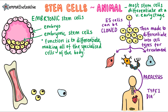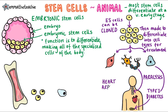Similarly, type 1 diabetes is when cells of the pancreas are damaged. Replacing them with working pancreatic cells could cure this condition. There are other applications as well, like new heart cells to repair heart damage, but paralysis and diabetes are the two conditions you need to learn for this specification.